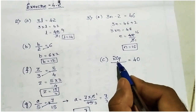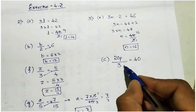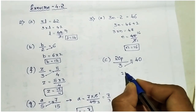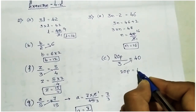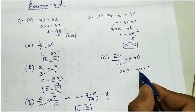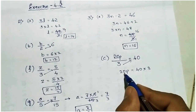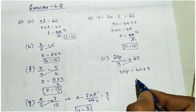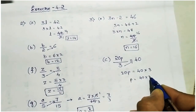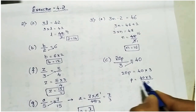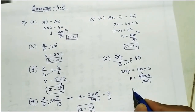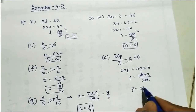Next: 20p by 3 equal to 40. Take 3 to the right side, it becomes multiplication with 40, so 40 into 3. Then if you take 20 to this side it becomes divisible: p equal to 40 into 3 divided by 20. 2 ones are 2, 2 twos are 4, 2 threes are 6, so p equal to 6.